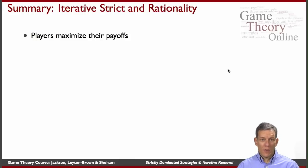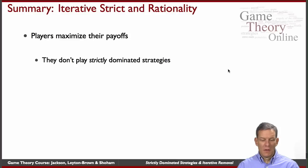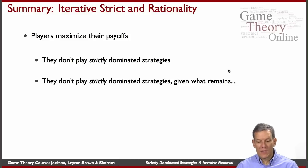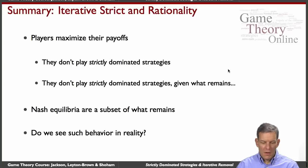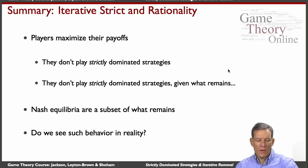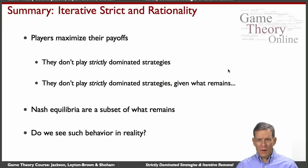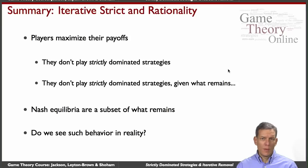To summarize: iterative strict domination — rational players maximize their payoffs, they don't play strictly dominated strategies, and they don't play strictly dominated strategies given what remains. We iterate on that. Nash equilibria are a subset of what remains, so it's a nice simple solution concept that helps us throw things out of the game and simplify what we're looking at. But we can also ask whether or not we see such behavior in reality — do people really act in ways consistent with eliminating strictly dominated strategies and moreover iterating on that process?